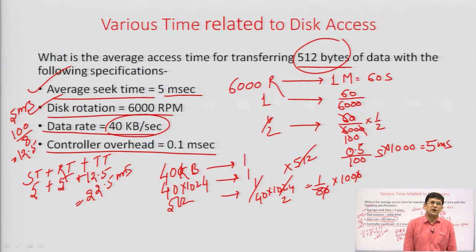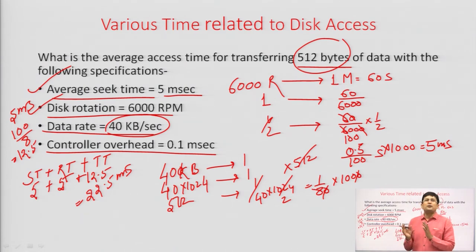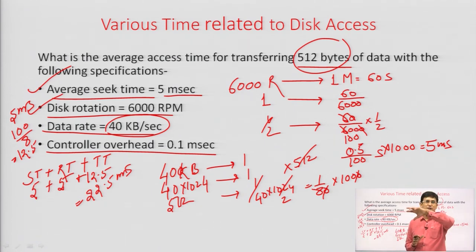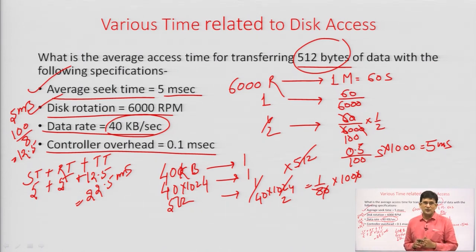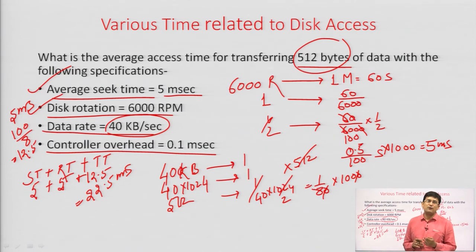So 22.5 milliseconds is required for the transfer of 512 bytes of data from the hard disk to the main memory. What we have learned: whenever the rotational latency is not given, we should consider that half a rotation will take place to locate the desired sector. If we are given the revolution speed, we can easily find the time for half a revolution.